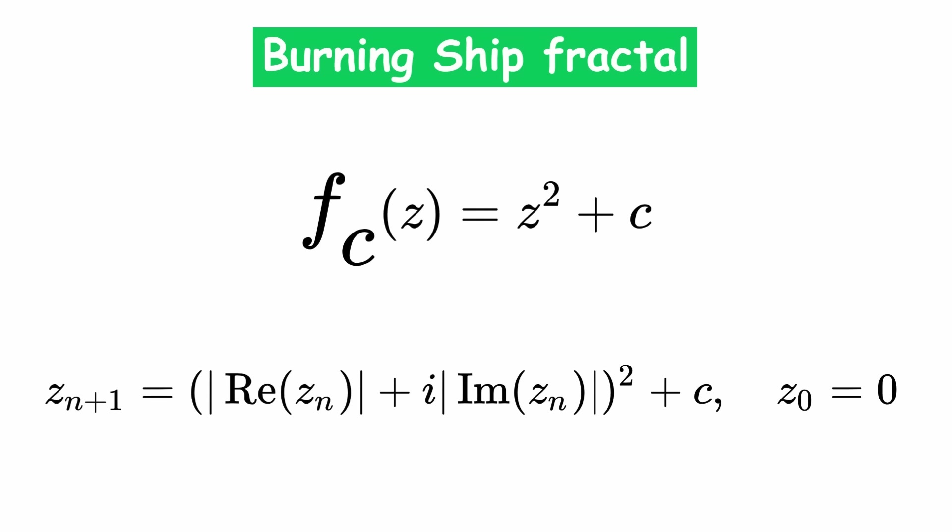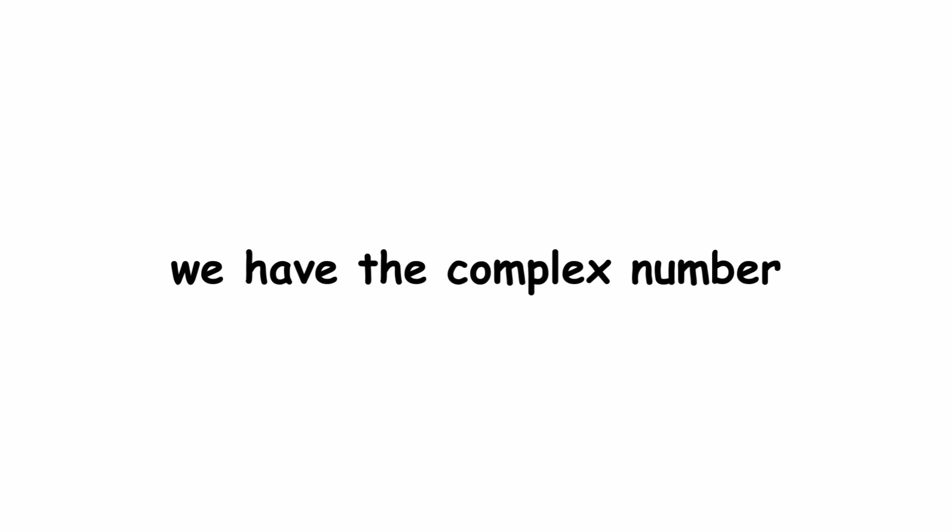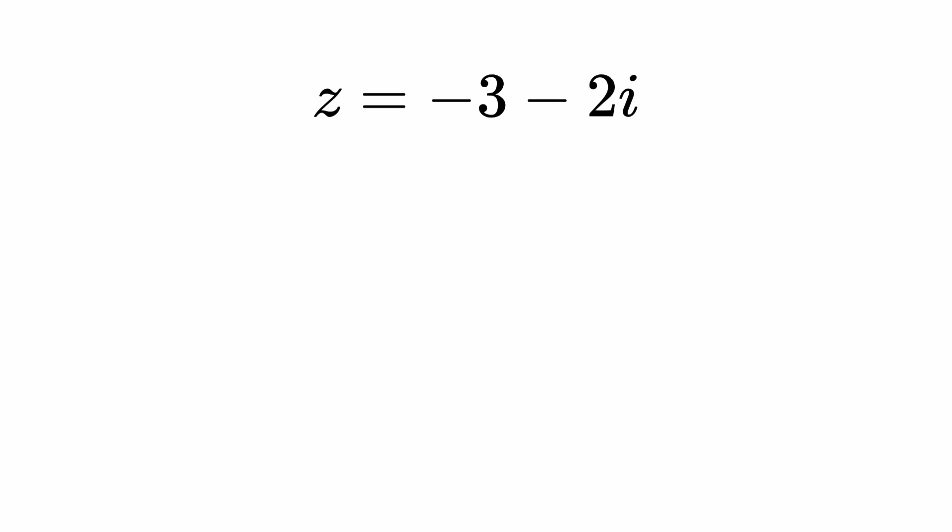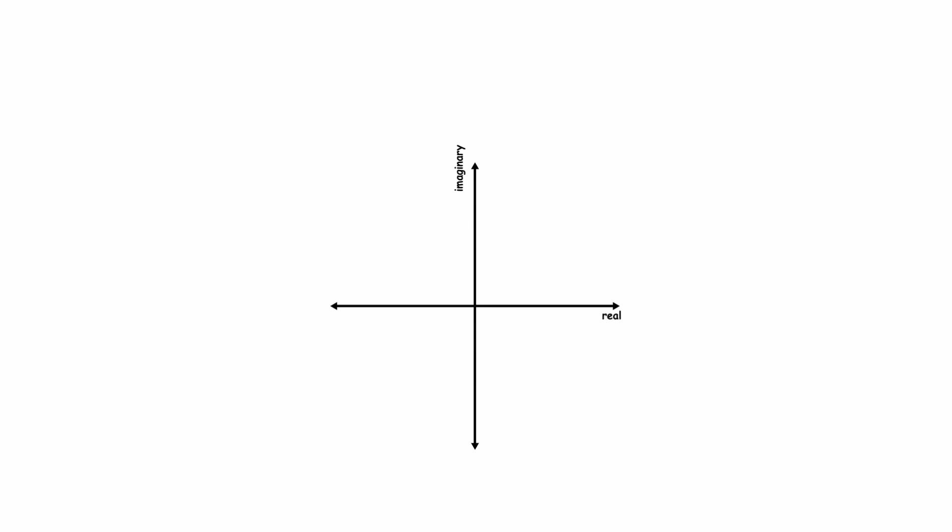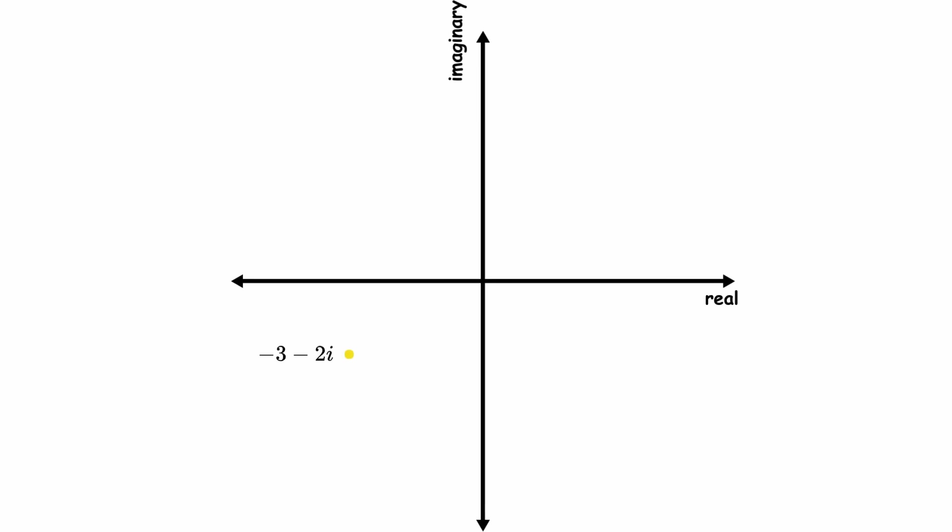Let's go through an example. Suppose we have the complex number z equals negative 3 minus 2i. The real part is negative 3 and the imaginary part is negative 2. Replacing each of these with their absolute value, we get the number 3 plus 2i. This can be represented graphically in the complex plane. We flip negative 3 minus 2i across the vertical axis, and then across the horizontal axis, so that it ends up in the upper right quadrant.